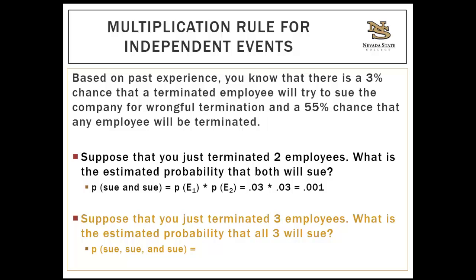Now pause the video: suppose you terminated three employees — what's the estimated probability all three will sue? Previously we had two employees with 0.03 times 0.03. Now with three employees: 0.03 times 0.03 times 0.03 equals 0.000027, or 0.00003 when rounded. Important note: do not round to the thousandths place if the value there will be 0 — round to the place with the first non-zero value, so 0.00003 rather than 0.000.